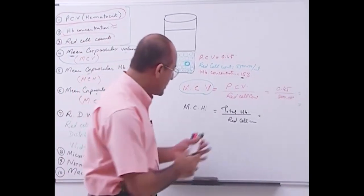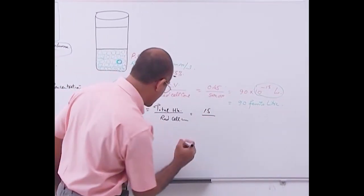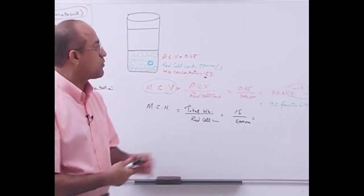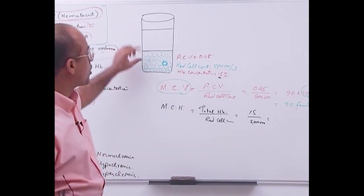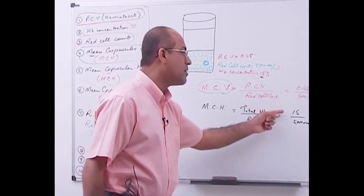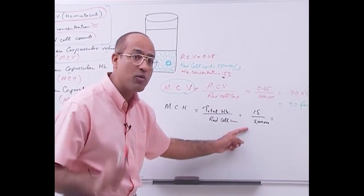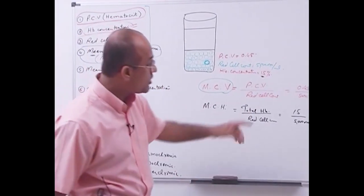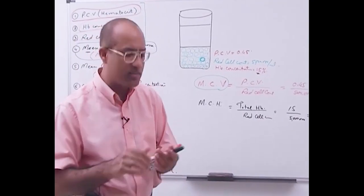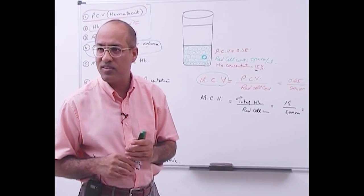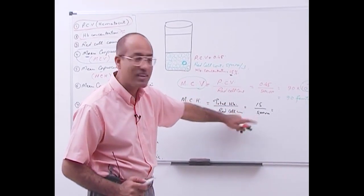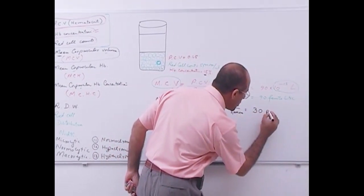Hemoglobin is 15% and red cell count is 5 million per ml. If we have 100 ml of blood, hemoglobin is 15 grams. In 100 ml of blood there are 500 million RBCs. So 15 grams divided by 500 million RBCs gives the hemoglobin per RBC - a very small unit. That result is in picograms: 15 divided by 5 is 3, so it is 30 picograms.